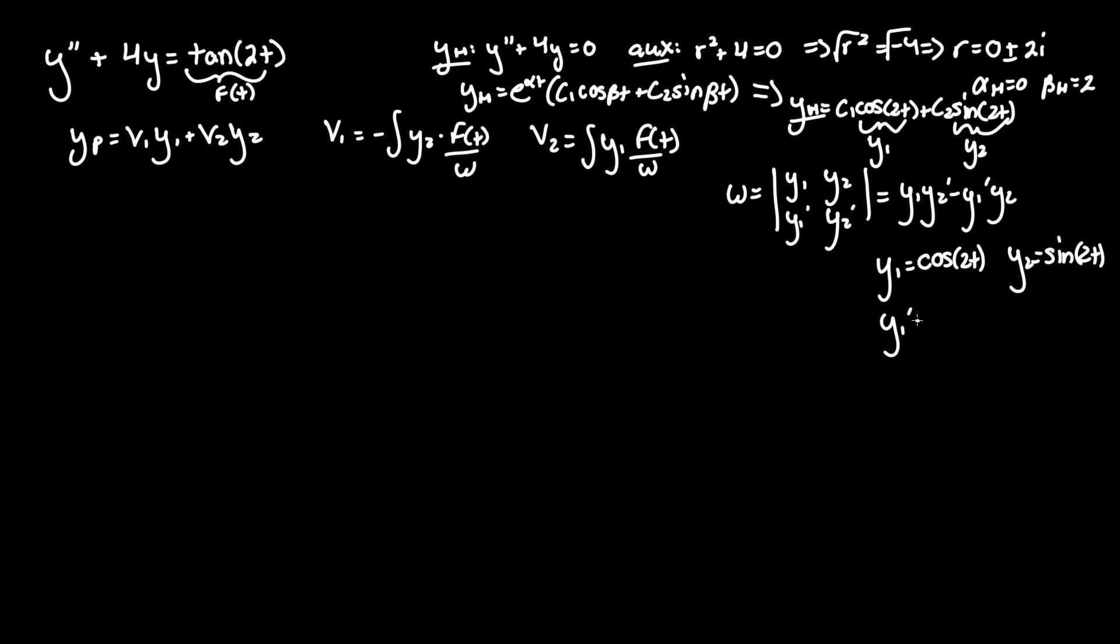And for y2 prime derivative of sine 2t is 2 cosine 2t.